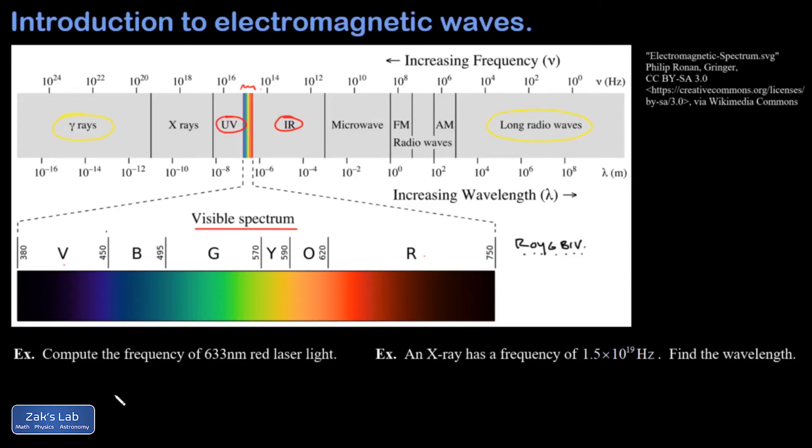We wrap things up with a couple simple examples, just talking about frequencies and wavelengths again. And in the first one, I want the frequency of 633 nanometer red laser light. So this is the classic red laser light. And we just do the familiar calculation C over lambda, and nano means 10 to the negative ninth. And I get a frequency of 4.74 times 10 to the 14 hertz. Again, that's extremely fast wiggling.